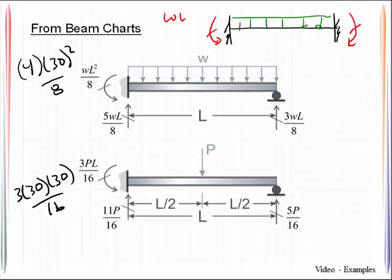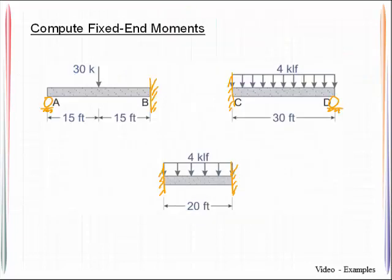And we would get that off of a beam chart, which for our particular span will be 4 kips per linear foot times 20 feet squared all over 12. If we do those calculations, we can bring them back here.